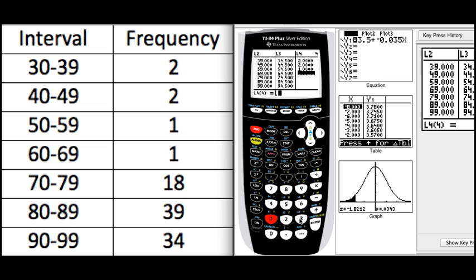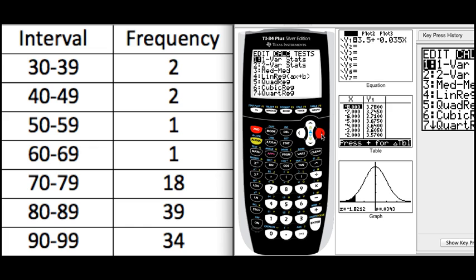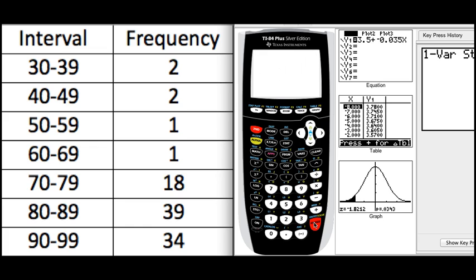Now, on L4, and we're almost done, we're going to go ahead and put the frequency: 2, 2, 1, 1, 18, 39, and 34. Awesome. Look at this. The most important lists here are going to be L3 and L4, so remember that.